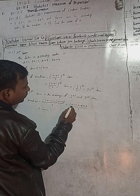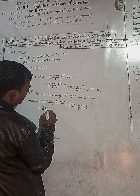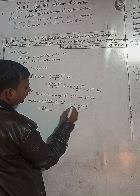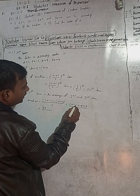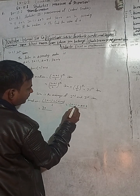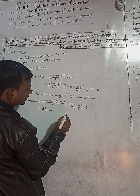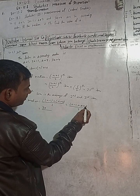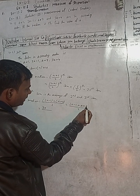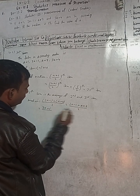Adding the terms: 2a + a = 3a, and −1 + 7 = 6. So the numerator becomes 3a + 6, giving us median = (3a + 6) / 2.